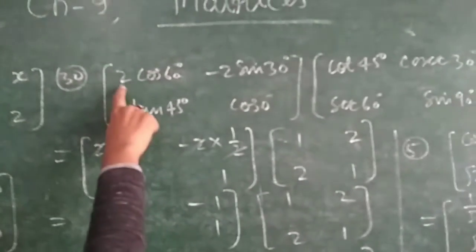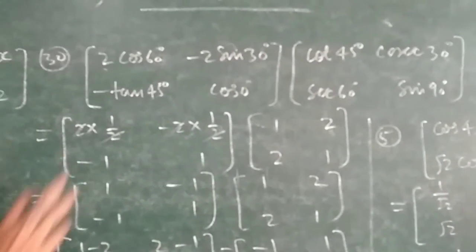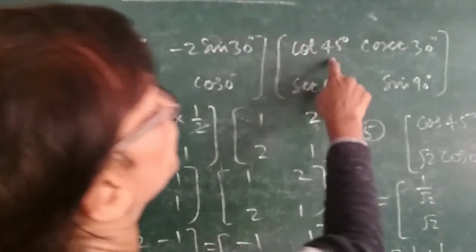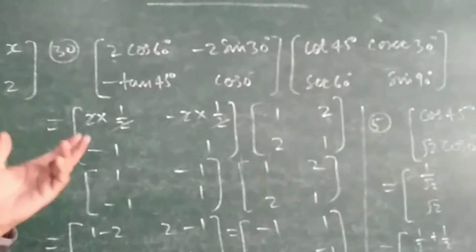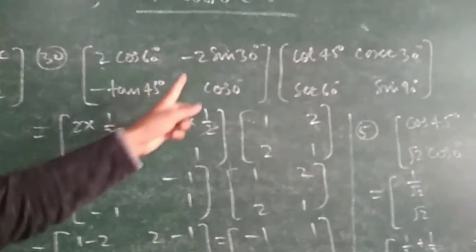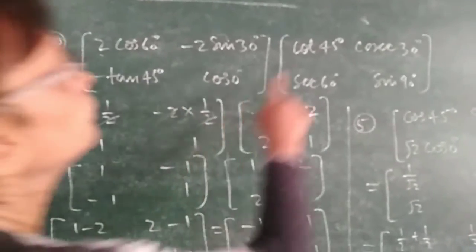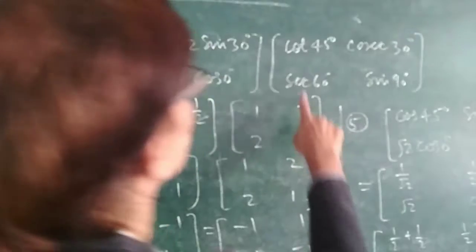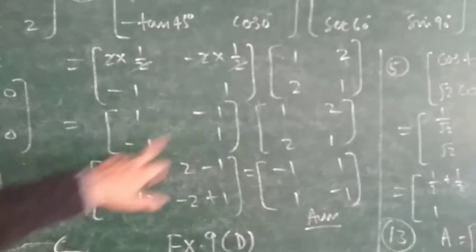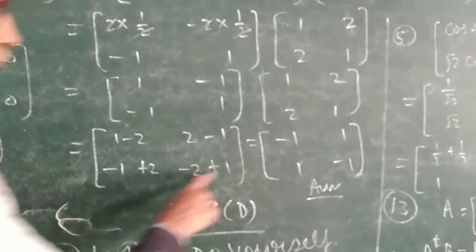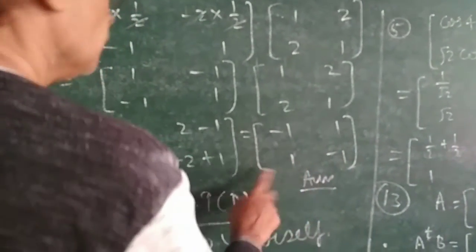Now question number 30. We are given a matrix made up of trigonometric values. First we convert them into their proper values. cos x, 2 into cos 0 equals 2, cot 45 equals 1, cosec 30 equals 2, sin 90 equals 1. Now multiplying the resulting matrix [1, -1; -1, 1] by [1, 2; 2, 1]: we get 1-2, 2-1, -1+2, -2+1, giving the answer matrix [-1, 1; 1, -1]. This is your answer.